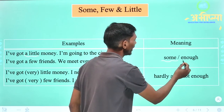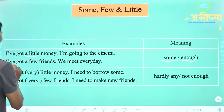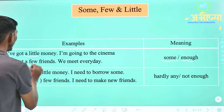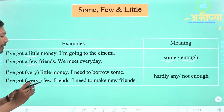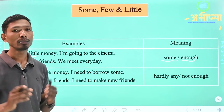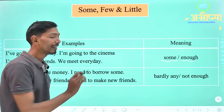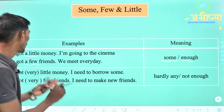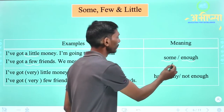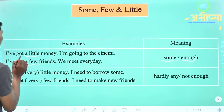'I have got a little money, I am going to the cinema.' Yahan pe 'a little' ka use hua hai. Yahan pe kaha ja raha hai ki mere paas kuch dhan hai, kuch paise hain, I am going to the cinema — mein cinema ja raha hoon. Yaani mere paas jo paise hain woh paryapt hain, isliye mein cinema ja raha hoon. So here 'some or enough' sense hai — paryapt. Next: 'I have got a few friends, we meet every day.' Here also, 'a few' — paryapt, enough sense.